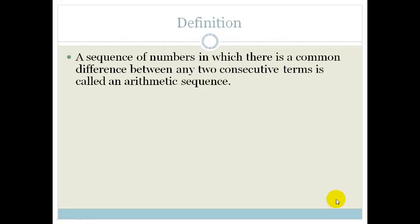First of all, the definition says a sequence of numbers in which there is a common difference between any two consecutive terms is called an arithmetic sequence. In other words, if we've got a sequence of numbers where they go up with a constant amount every time, then that is an arithmetic sequence.